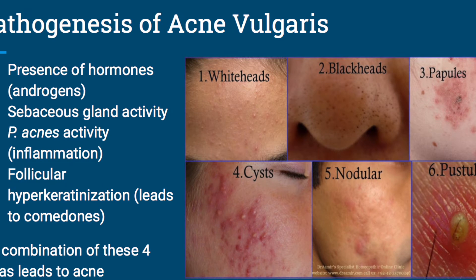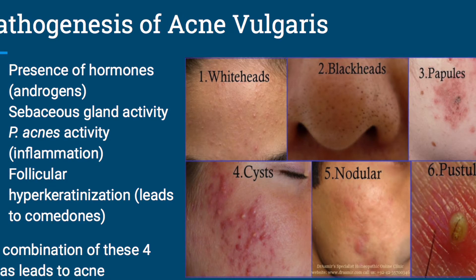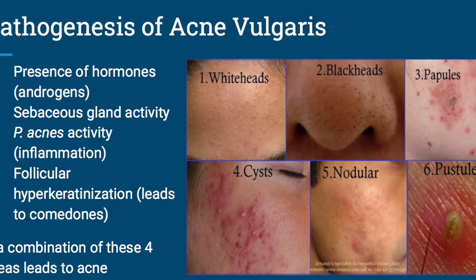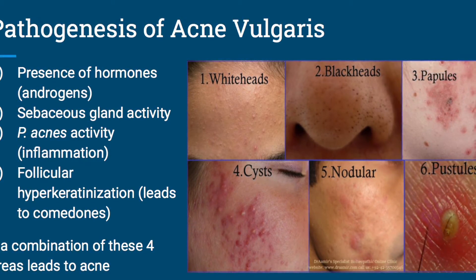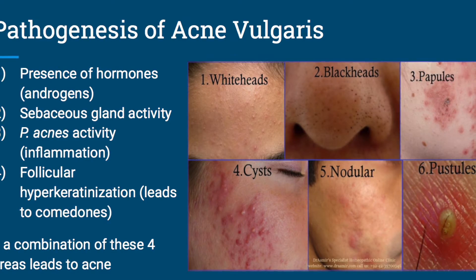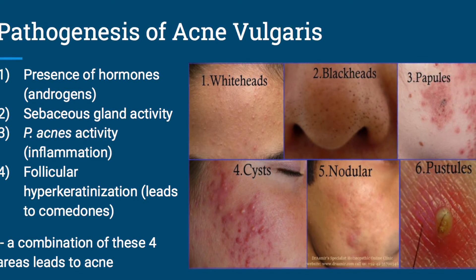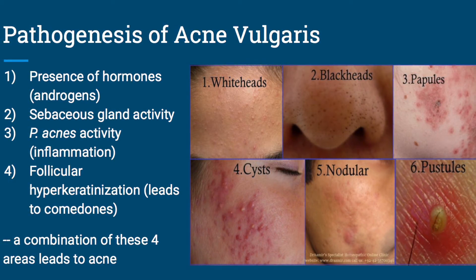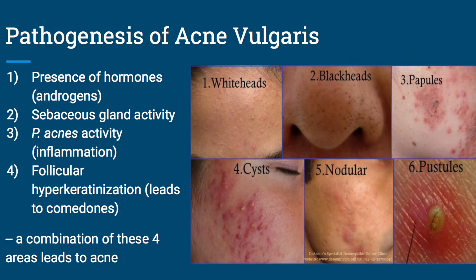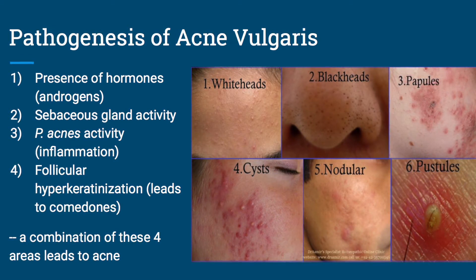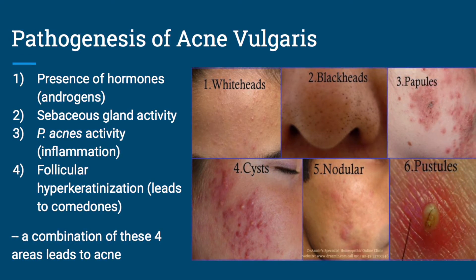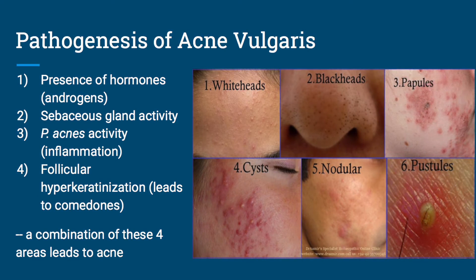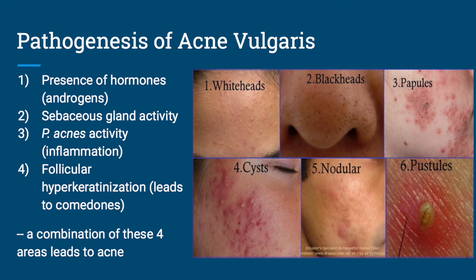Now we're going to go into the pathogenesis of acne, which is closely tied to what we just went over. The different steps are the presence of hormones — androgens — sebaceous gland activity, activity of P. acnes which leads to inflammation, and follicular hyperkeratinization. This leads to different comedones. It's a combination of these four things that leads to acne. The different clinical presentations of acne include whiteheads, blackheads, open and closed comedones, papules, cysts, nodules, and pustules.